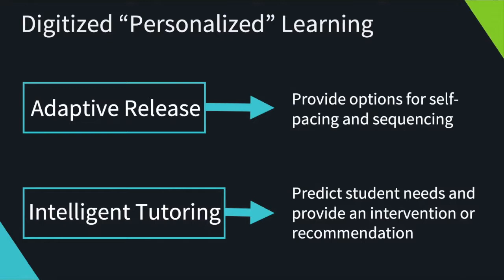Personalized learning is a buzzword in ed tech today, applied in lots of contexts — things like adaptive release, where you're providing students options for self-pacing and sequencing through an online or blended learning course. You have intelligent tutoring, where artificial intelligence tries to predict student needs and provide specific interventions based on how other students have performed. While these kinds of uses of AI are only going to increase and play an important role in education, one thing they don't necessarily do is teach students to be effective learners. They're effective at helping students master content, but they don't necessarily open up opportunities for students to develop effective learning practices.